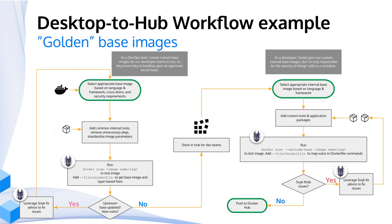I always talk about when you're first coming to Docker and building your images: get your application running in a container first, and then start slimming down — kind of the same thing Jim was just talking about with security vulnerabilities. Start where you need, then start slimming down and be strategic about reasons why you're removing things from the image. Sometimes if you start with a very slim base or scratch, you find a whole bunch of problems and have to become almost a Linux distro maintainer. It's not fun, but yeah — get your app running first.